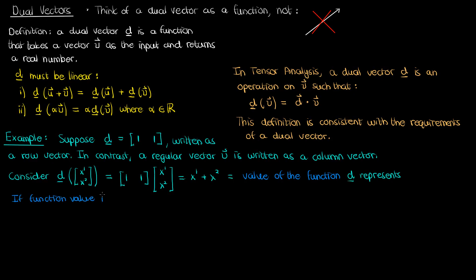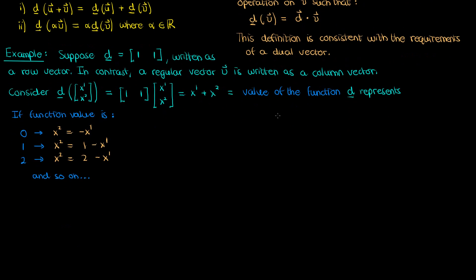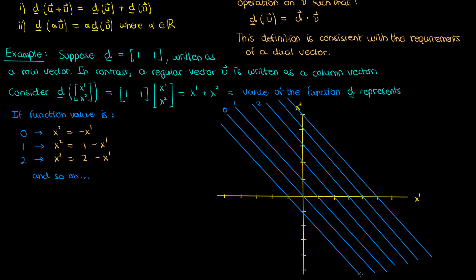This means the value of the function that d represents equals x super 1 plus x super 2. So if the value of my function is 0, then x super 2 equals negative x super 1. If the value is 1, x super 2 equals 1 minus x super 1, and so on for values 2, 3, etc. When I plot this in my x super 1, x super 2 coordinate system — which I'll assume is a rectangular Cartesian coordinate system — I get different lines.